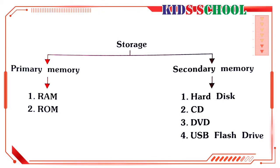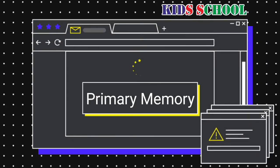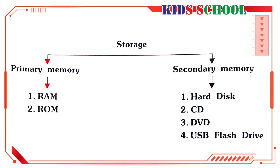Dear students, there are two kinds of storage areas in a computer: primary memory and secondary memory. This can be clearly understood from this illustration. Primary memory — dear students, primary memory is also known as main memory or internal memory.